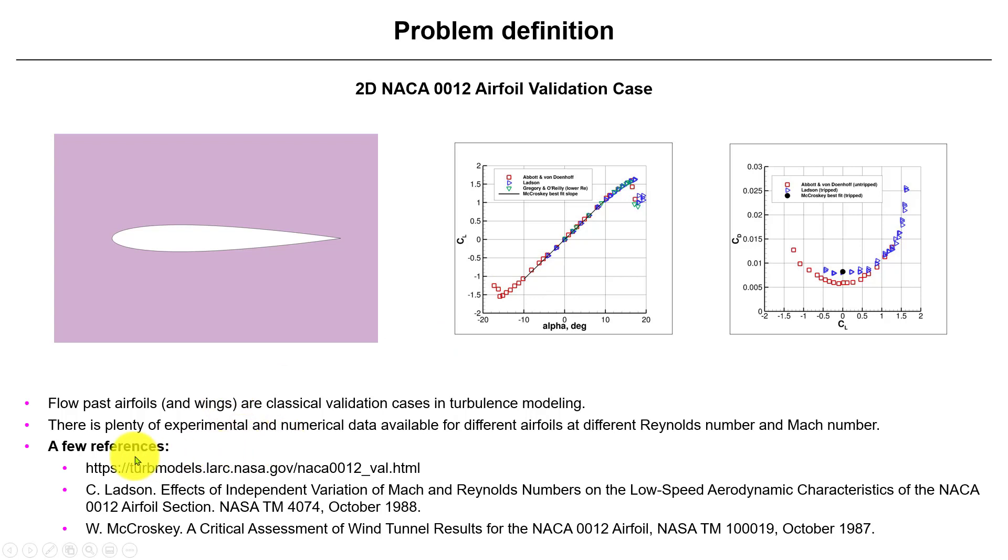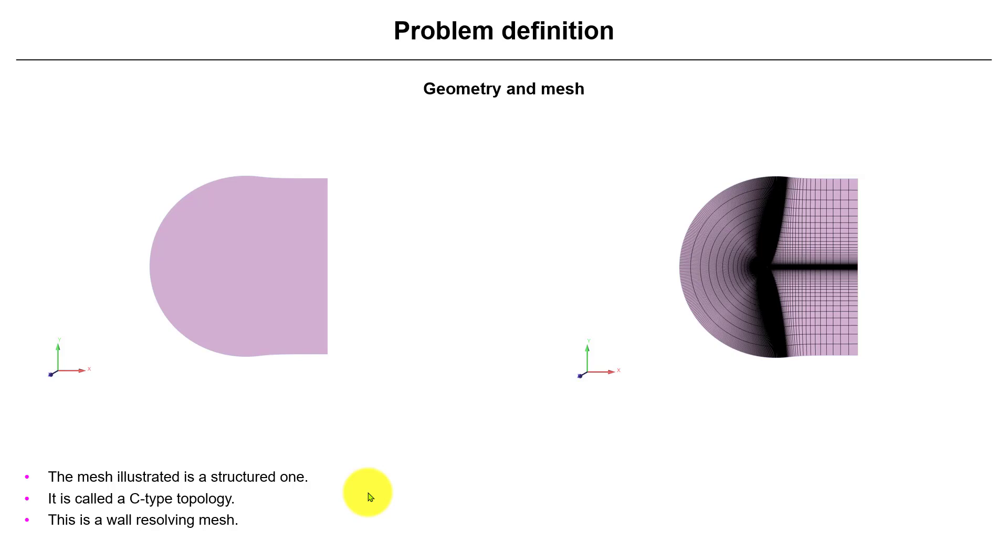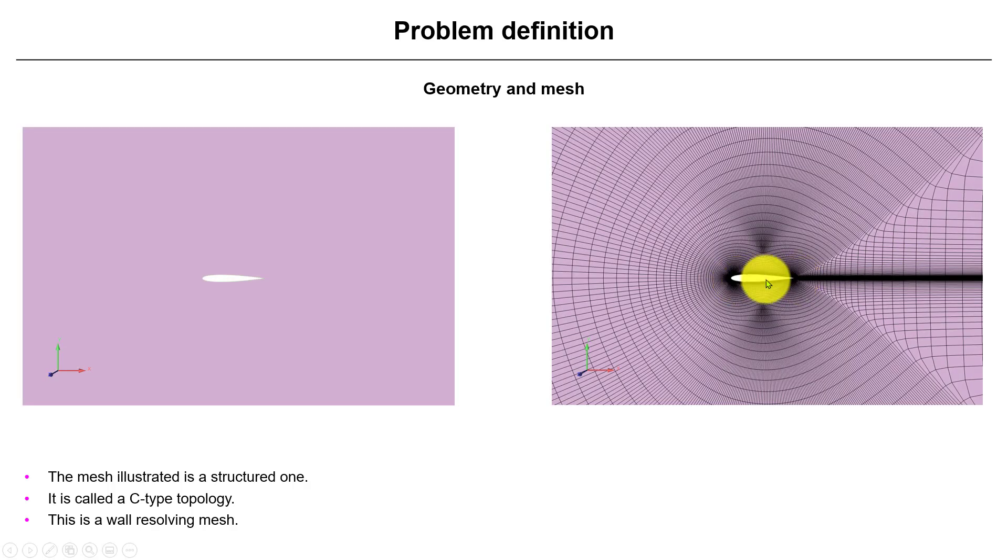For your information, you have a few references, including the classical NASA reports. You have a few cases and data you can compare your case with, and two very interesting references. We have the mesh pre-manufactured, but I'm going to show you also how to generate meshes and how to import the airfoil coordinates. This is what is known as C-type topology mesh - a wall-resolved mesh, a very good mesh.